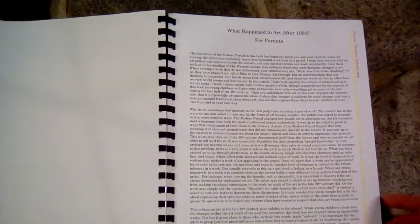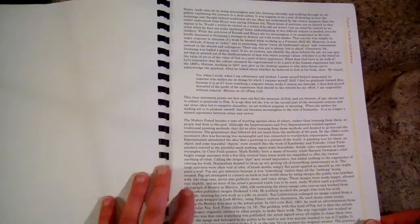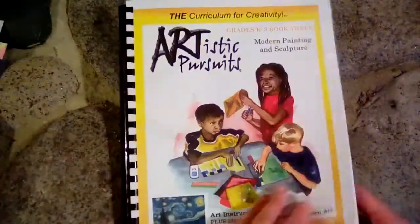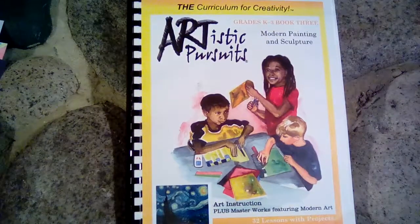And then there's an explanation for parents at the end about what happened to art after 1960, because it changes a lot in the modern times from what it used to be. So that is this book, and I'm going to show you a few of the projects we did so that you can get an idea of some of the things.